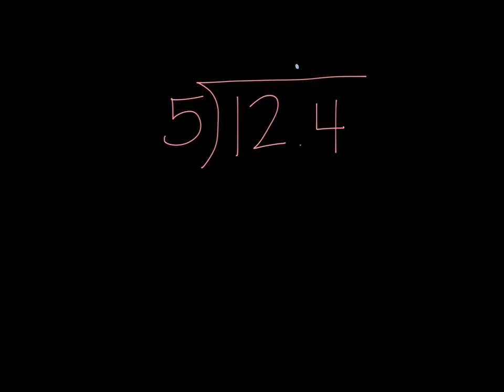First, I'll go ahead and place my decimal directly above where it is in the dividend into the quotient. Five doesn't go into one, so I'll look at this like five into twelve. I know that five goes into twelve two times. Two times five is ten. Subtract to get the difference or the remainder, which is two. Bring down the next number, which is four.